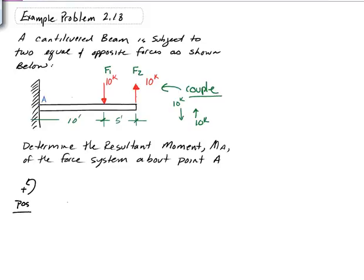And we sum the moments, we look at the moments about point A. We get 10 kips times 10 feet for F1, and that's in a negative sense because it's going counterclockwise about point A. So I'll put a negative in front of there.